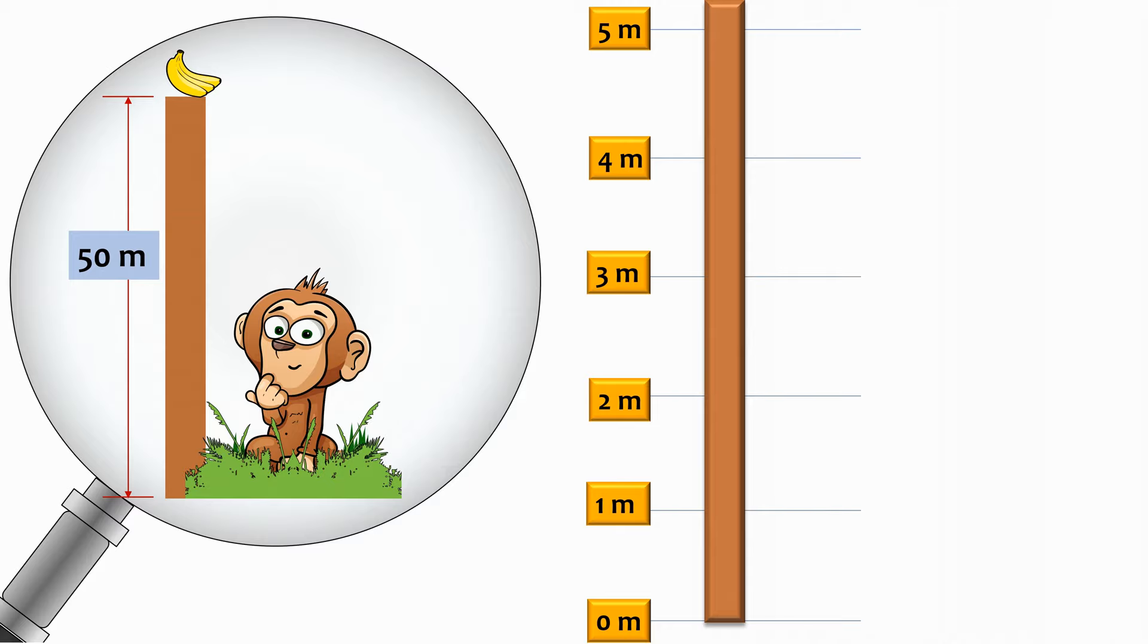So this is the pole. This is the monkey. He climbs one, two, and three meters in the first hour, like so, and reaches the three meters mark. But slips down one and two meters, like so, and finally settles on the one meter mark for the current hour. So he has climbed one meter in this hour.